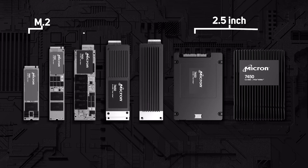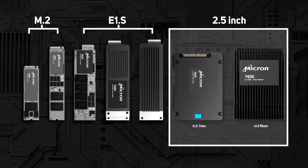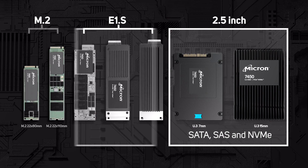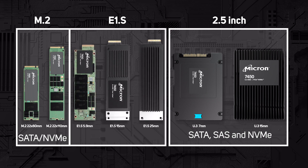There are three different physical sizes: two and a half inch, M.2, and E1.S. Two and a half inch drives are available in three interfaces: SATA, SAS, and NVMe — also known as U.2 or more recently U.3. M.2 drives come in either SATA or NVMe, and E1.S, also known as Ruler, just comes in NVMe, which should be chosen where high performance and low latency are key.